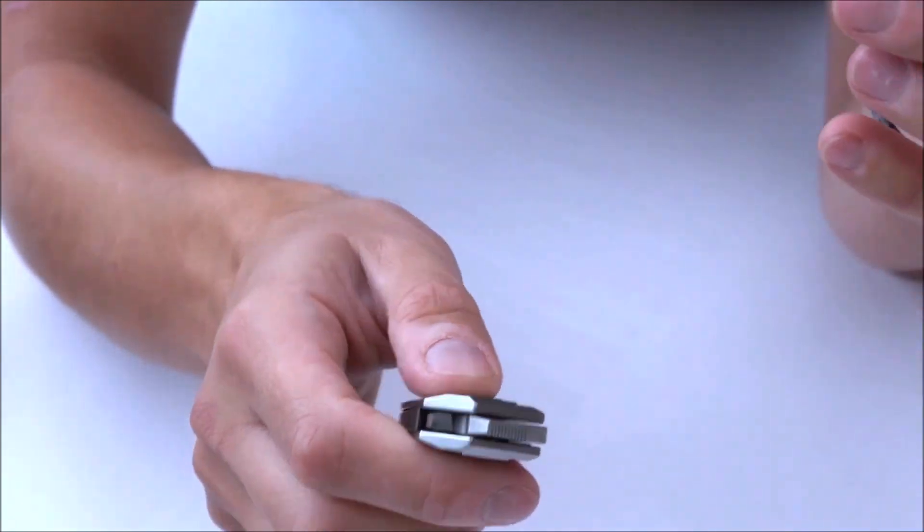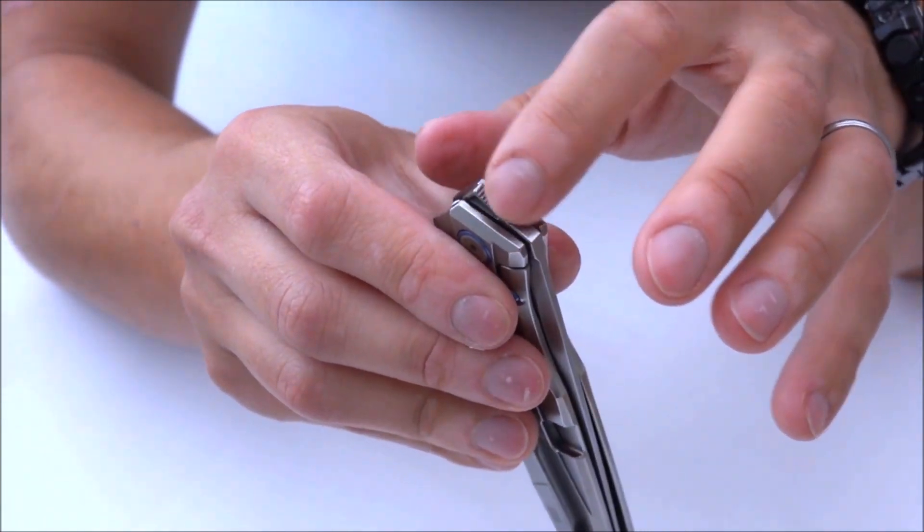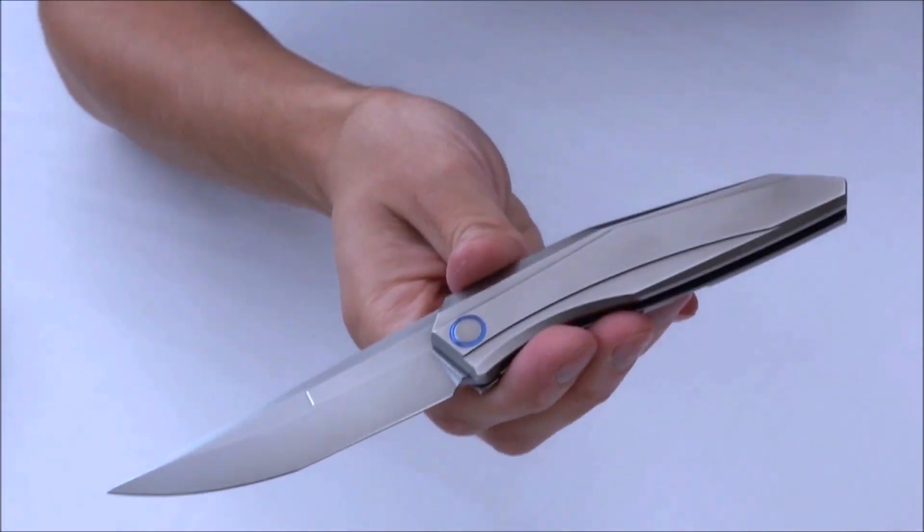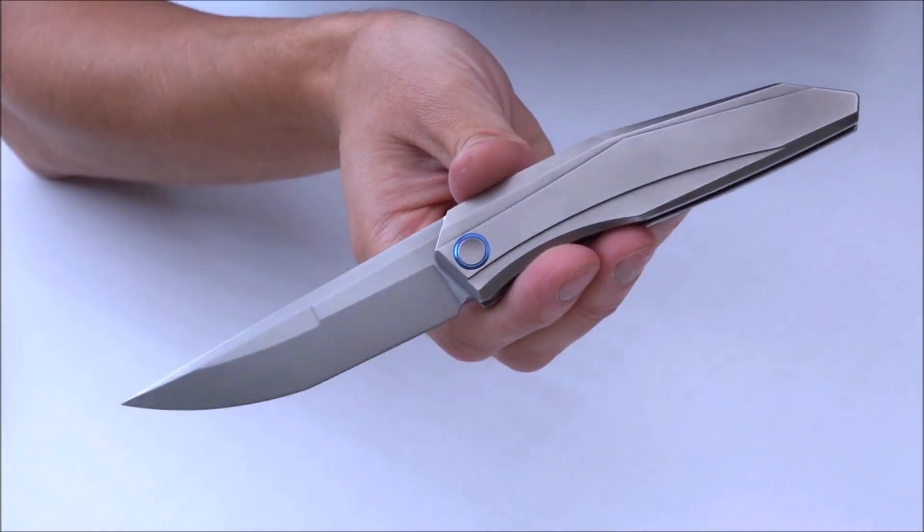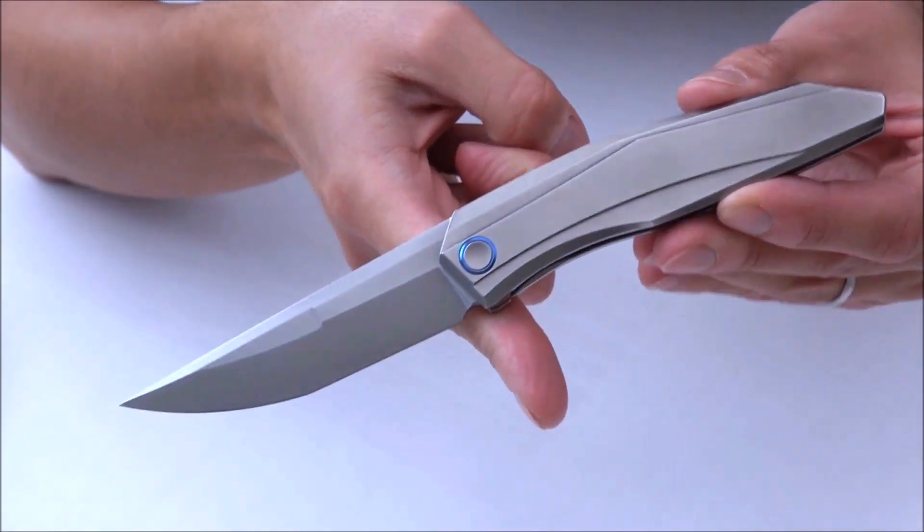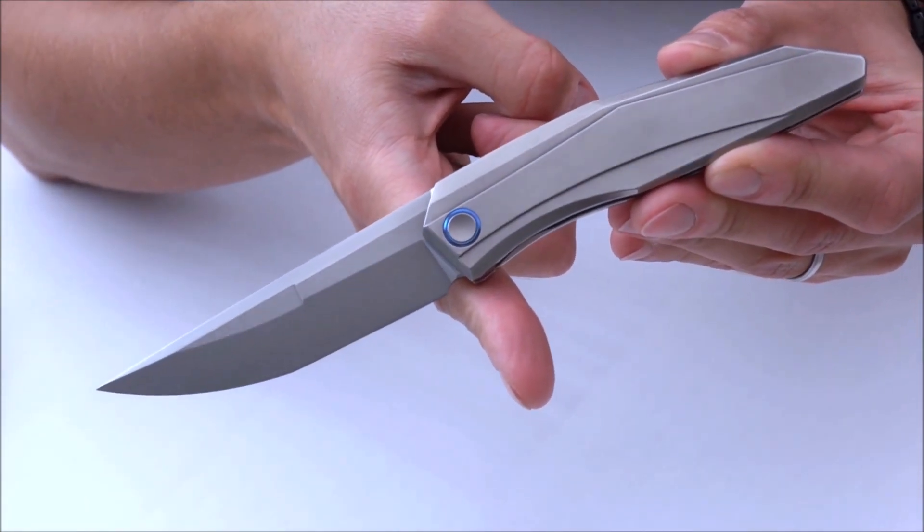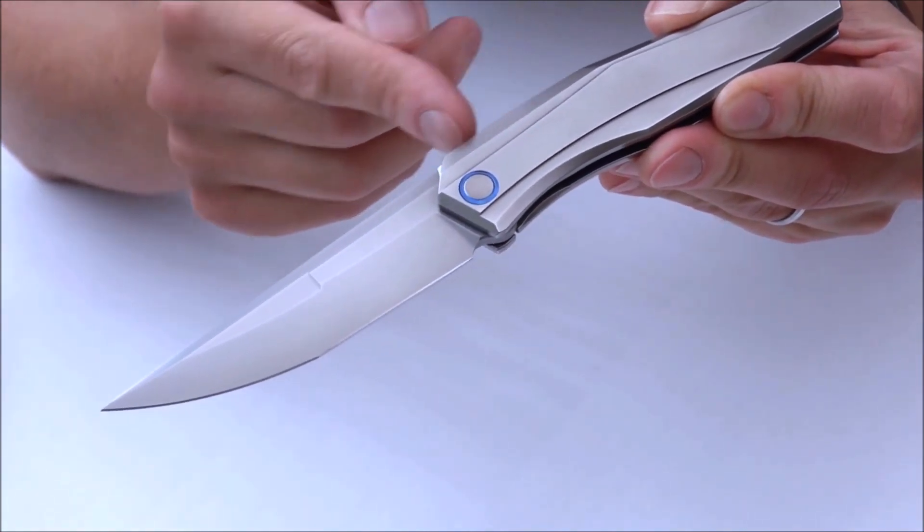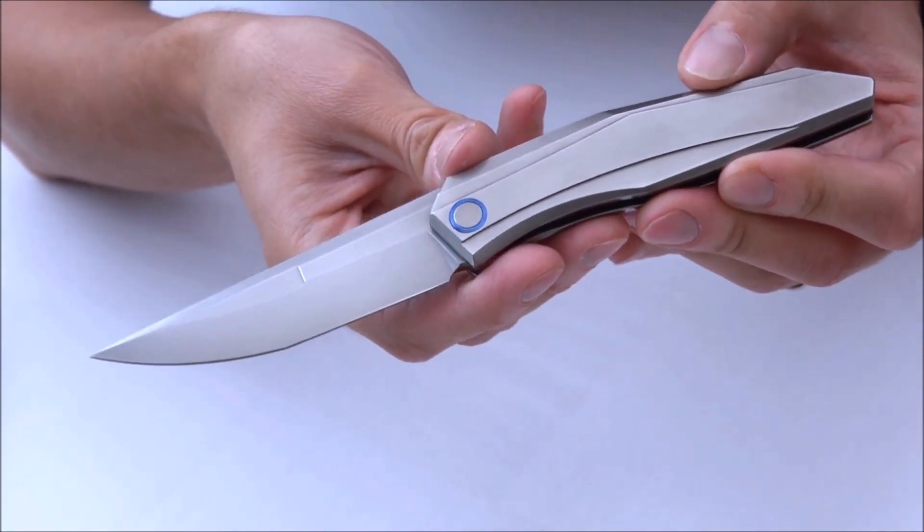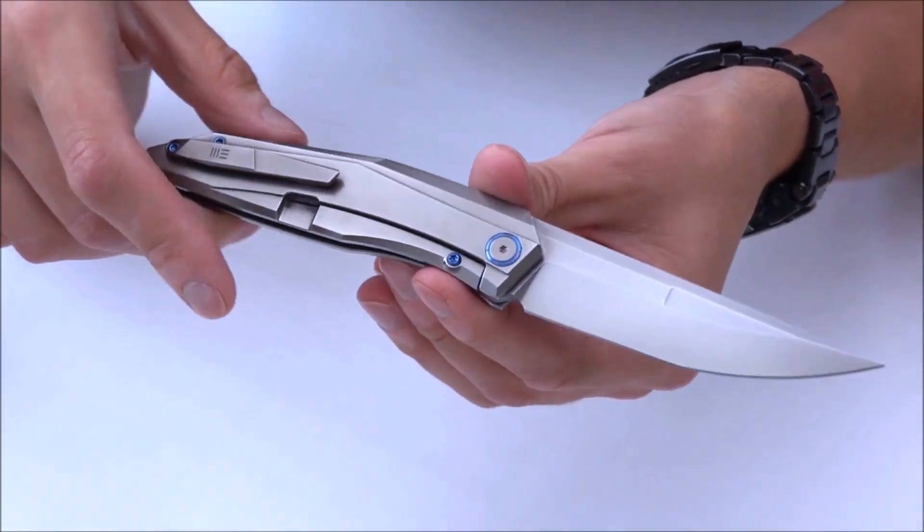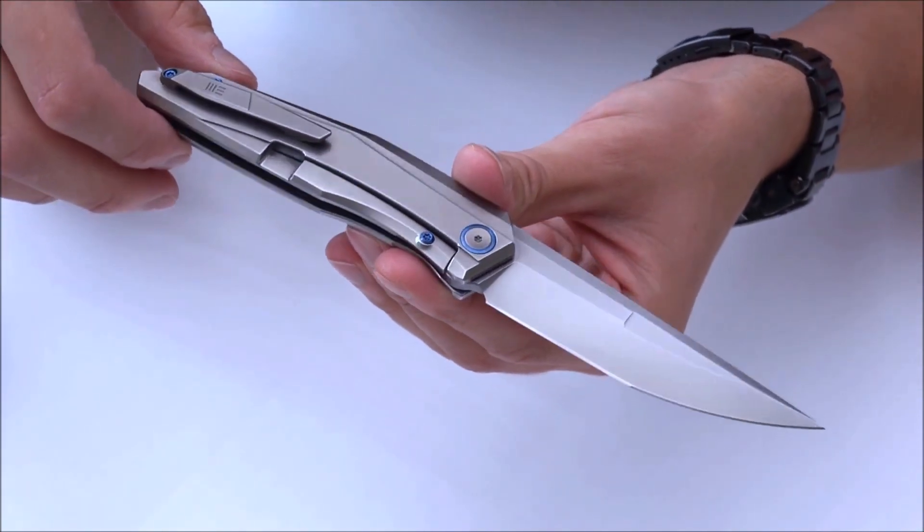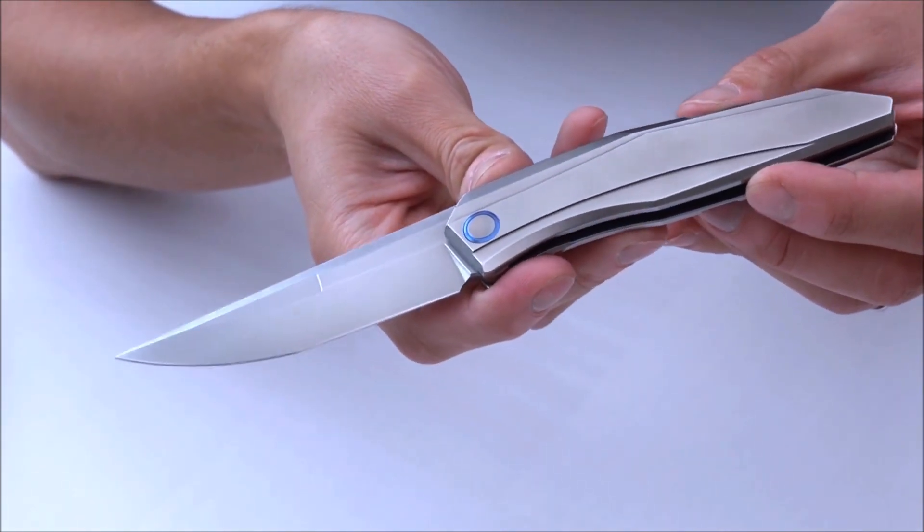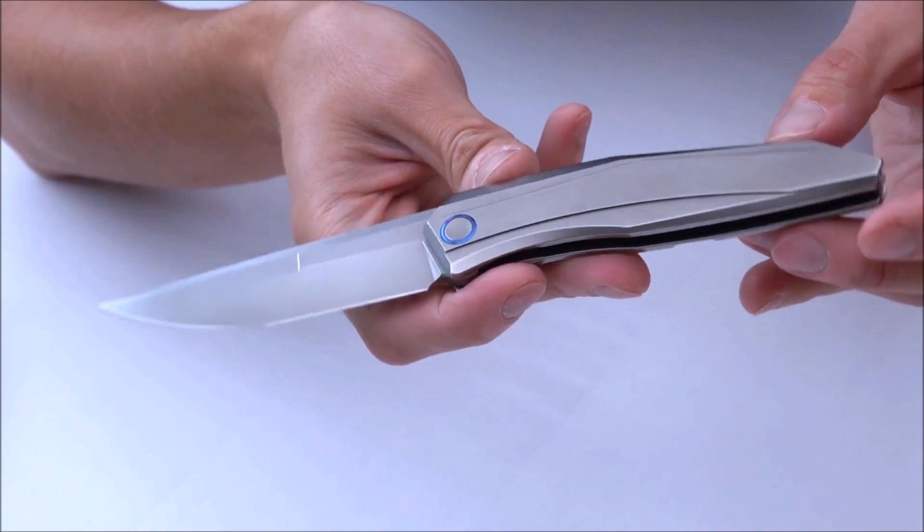Very nice, elegant look to it. And I do like the grey polish here and the blue pivot collar, and the blue screws. It does have a nice look to it. Let's unfold it now. This is obviously a front flipper with some jimping here.